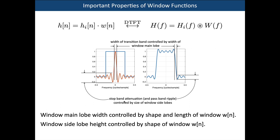To get small ripples in the practical response, we need small side lobes in the window. To get a fast transition from stop band to pass band, we would like a very narrow main lobe in our window function. Generally, we want a narrow main lobe to minimize transition bandwidth, and small side lobes to achieve small ripple in both the pass band and the stop band.